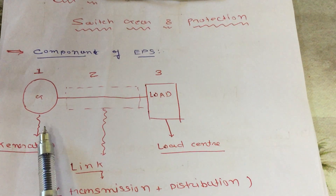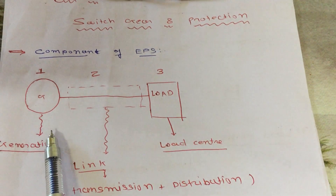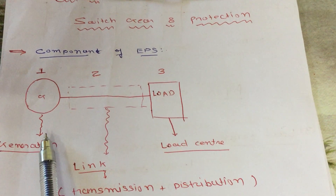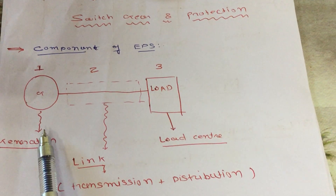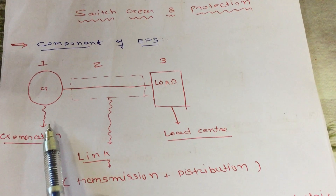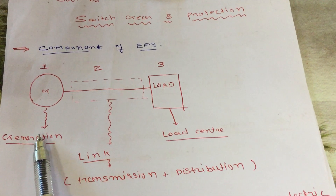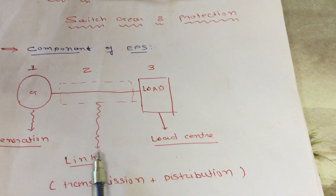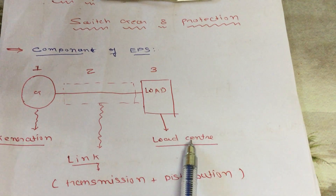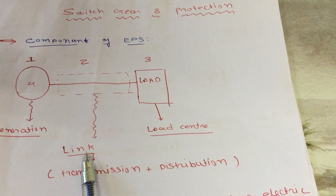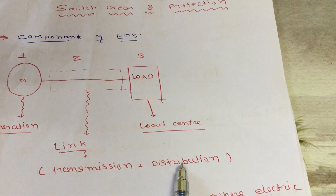Here is the figure showing the components of electrical power system. Electrical power system consists of three major components. The first component is generation. The second component is the link connecting generation and load center, which contains a transmission section and a distribution section.